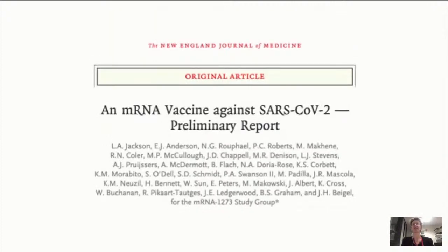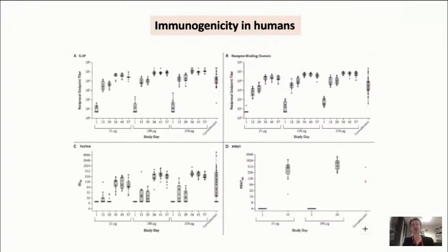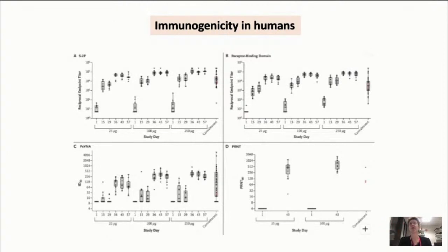Data from the New England Journal of Medicine publication on the Moderna vaccine: reactogenicity is similar to a viral vector vaccine, except the second dose is more reactogenic. For immunogenicity, different dosing levels show very good responses — 25 and 100 micrograms produce good antibody responses without needing 250 micrograms, which was significantly more reactogenic. Neutralizing titers are similar to those in convalescent sera. Very good responses with two doses.